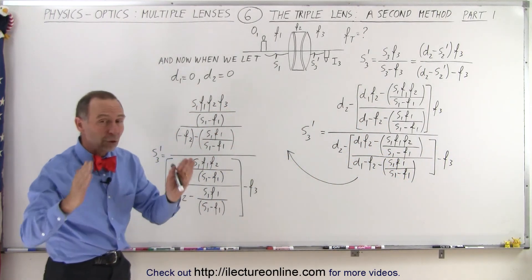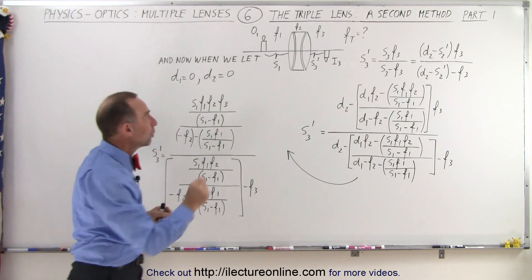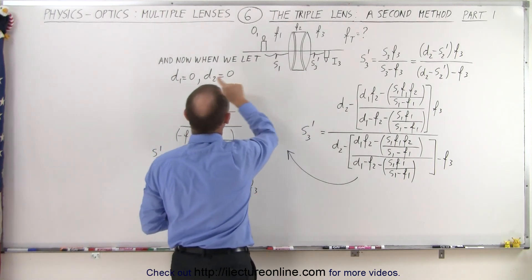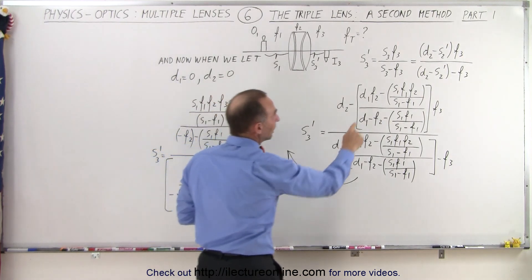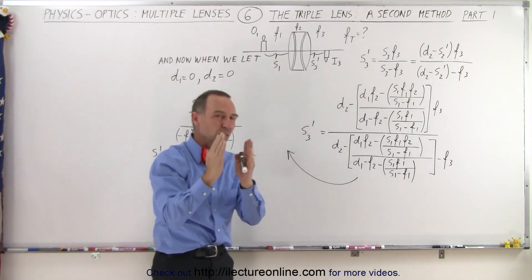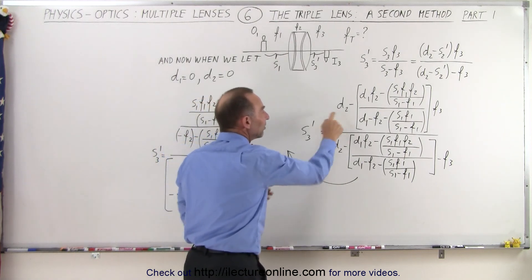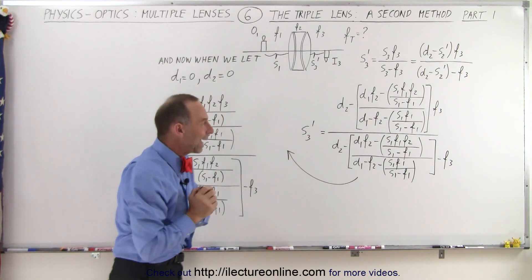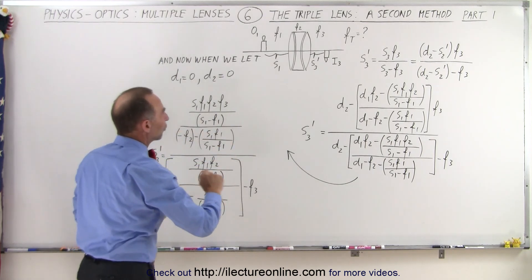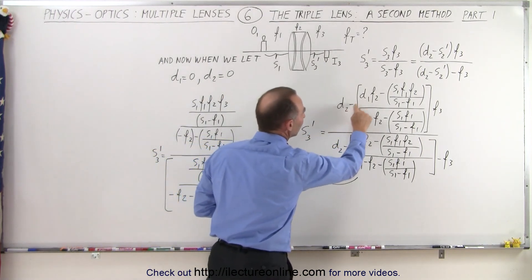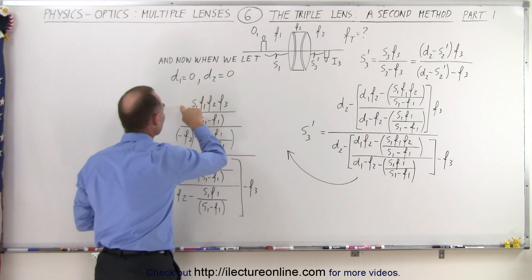Now to make things easier, we're going to put the lenses close together and remove D1 and D2. We're going to set D1 equal to 0 and D2 equal to 0. D1 is the distance between lens 1 and lens 2. D2 is the distance between lens 2 and lens 3. When we do that, and the D's disappear, of course, don't forget we have this negative here, which applies to this negative, makes this positive.